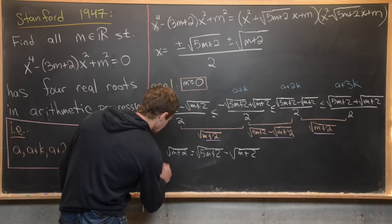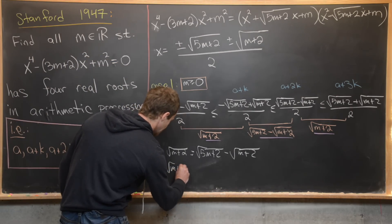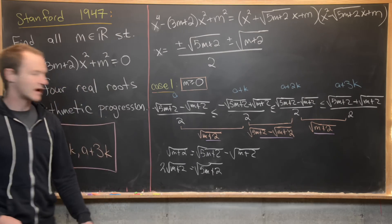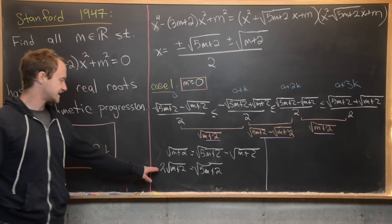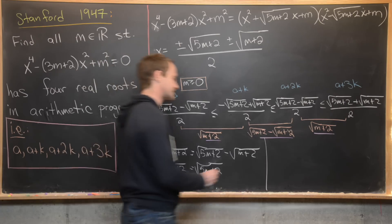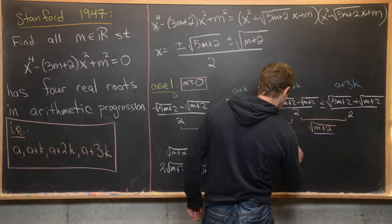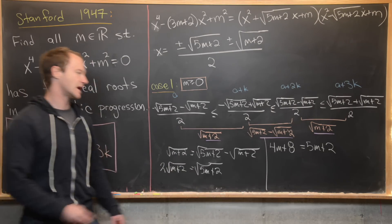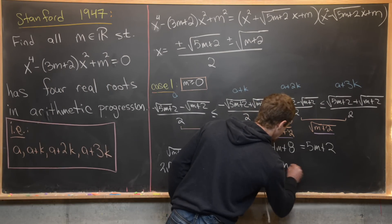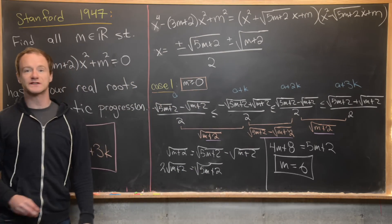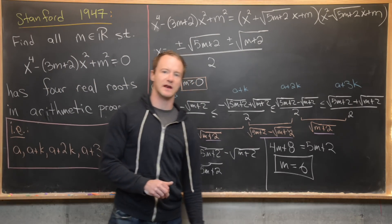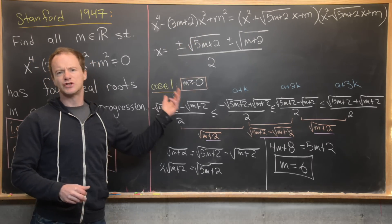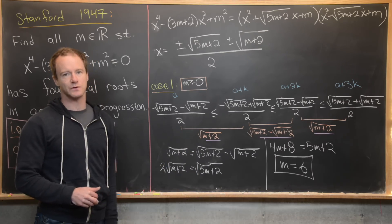This gives 2√(m+2) = √(5m+2). Squaring both sides: 4(m+2) = 5m+2, so 4m + 8 = 5m + 2, which gives m = 6. So m = 6 yields four real roots in arithmetic progression.